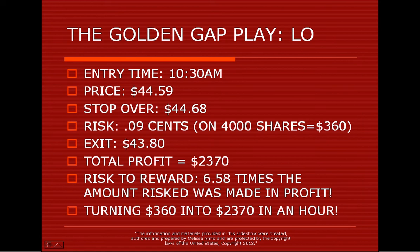You didn't have to risk $360 — you could have risked $100, $150, $180, half of that. With half the risk you still have the same risk-to-reward: 6.58 times the amount of risk was made in profit. So if you risked $180, you would have made over $1,100. Either way, it's a beautiful trade. You could turn $360 into $2,370 in one hour — just one hour of work, one hour of your day, done before lunch, done by 11:30 Eastern Time. Move on with your day, go to another job, go out to the pool. It's summer — a great time to trade gaps.